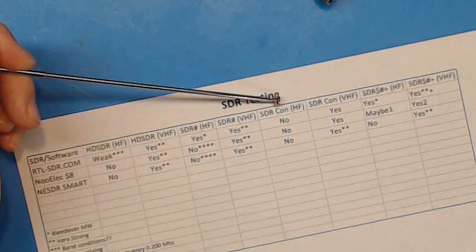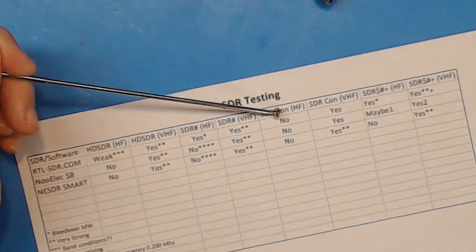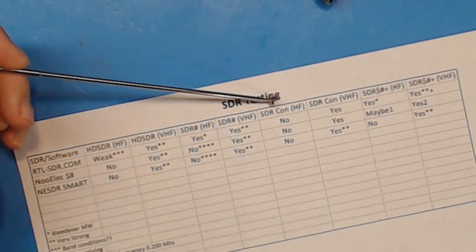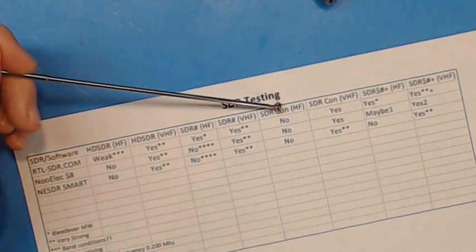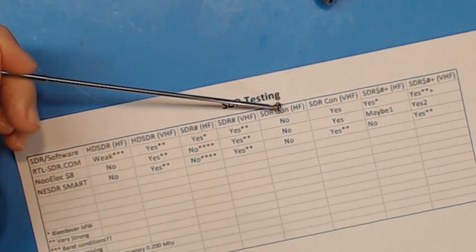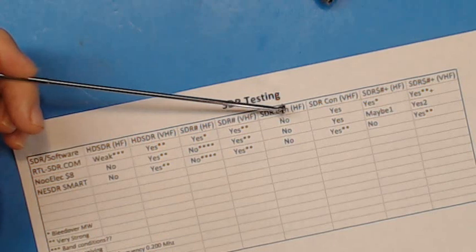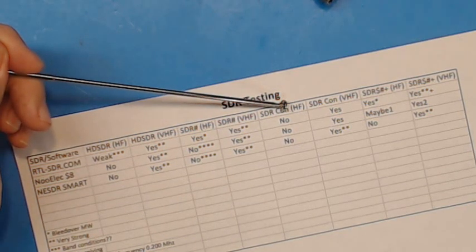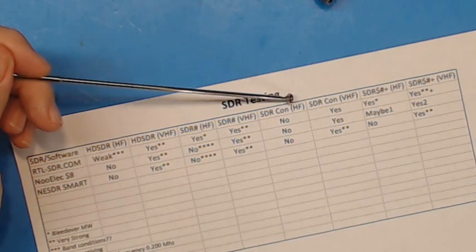Then I went to SDR-Console, HF, I got nothing. Again, there is nothing that I can find in SDR-Console to change the mode of the receiver from quadrature to direct. So I got no signals whatsoever with SDR-Console in the HF mode.